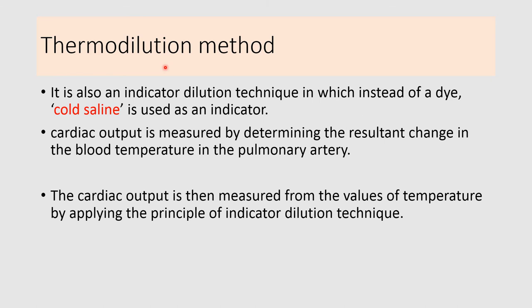The thermodilution method works on the same principle as the indicator dye dilution method. Cold saline is injected directly into the ventricle, and the gradual change in temperature is measured in the pulmonary artery. Cardiac output is calculated from the temperature values by applying the principle of indicator dilution.